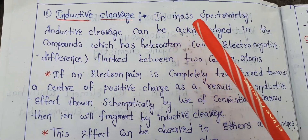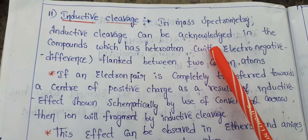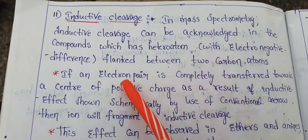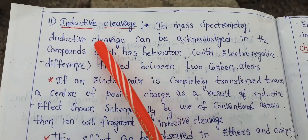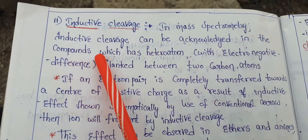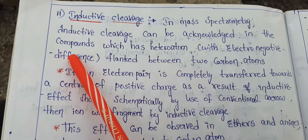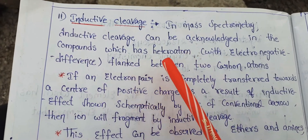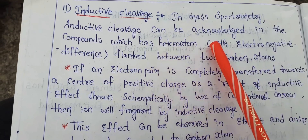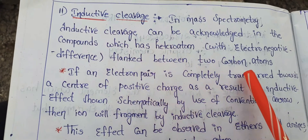Inductive cleavage. In mass spectrometry, inductive cleavage can be observed in compounds which have a heteroatom flanked between two carbon atoms. The compound should have a heteroatom, and that heteroatom should be present between two carbon atoms. In this case, inductive cleavage can be observed.